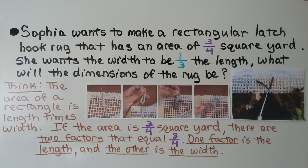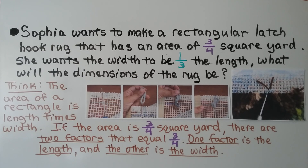Sophia wants to make a rectangular latch hook rug that has an area of three-fourths square yard, and she wants the width to be one-third the length. What will the dimensions of the rug be? The area of a rectangle is length times width. If the area is three-fourths square yard, there are two factors that equal three-fourths — one is the length and the other is the width. So, what times what equals three-fourths?